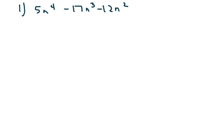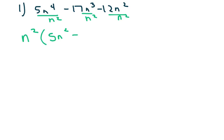The first thing I noticed is that coefficient-wise, there's nothing in common between 5, 17, and 12. However, I can divide everything by n squared, and that's your highest common factor. So instead of actually dividing, we're calling it a factor — we're going to pull out the n squared. And then when you divide, you're going to get 5n squared minus 17n minus 12.